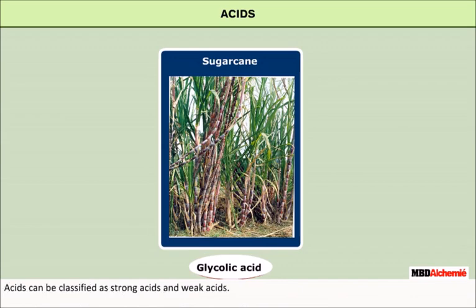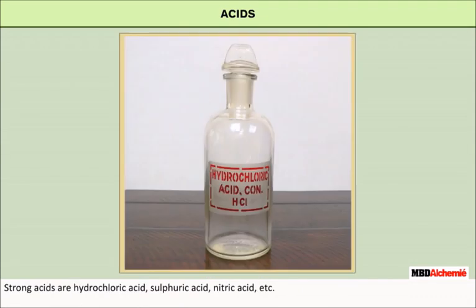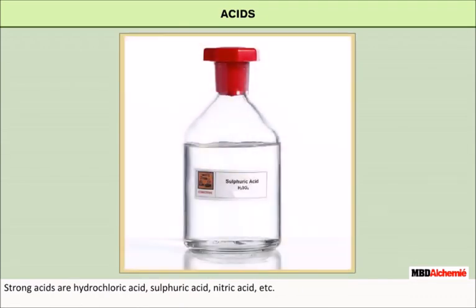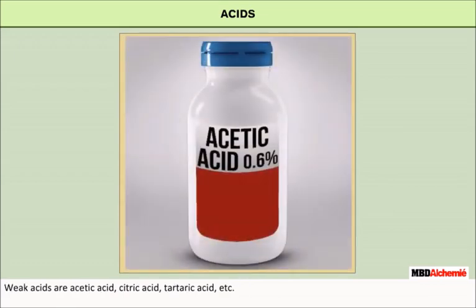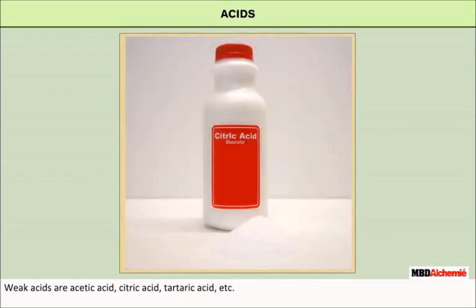Acids can be classified as strong acids and weak acids. Strong acids are hydrochloric acid, sulfuric acid, nitric acid, etc. Weak acids are acetic acid, citric acid, tartaric acid, etc.